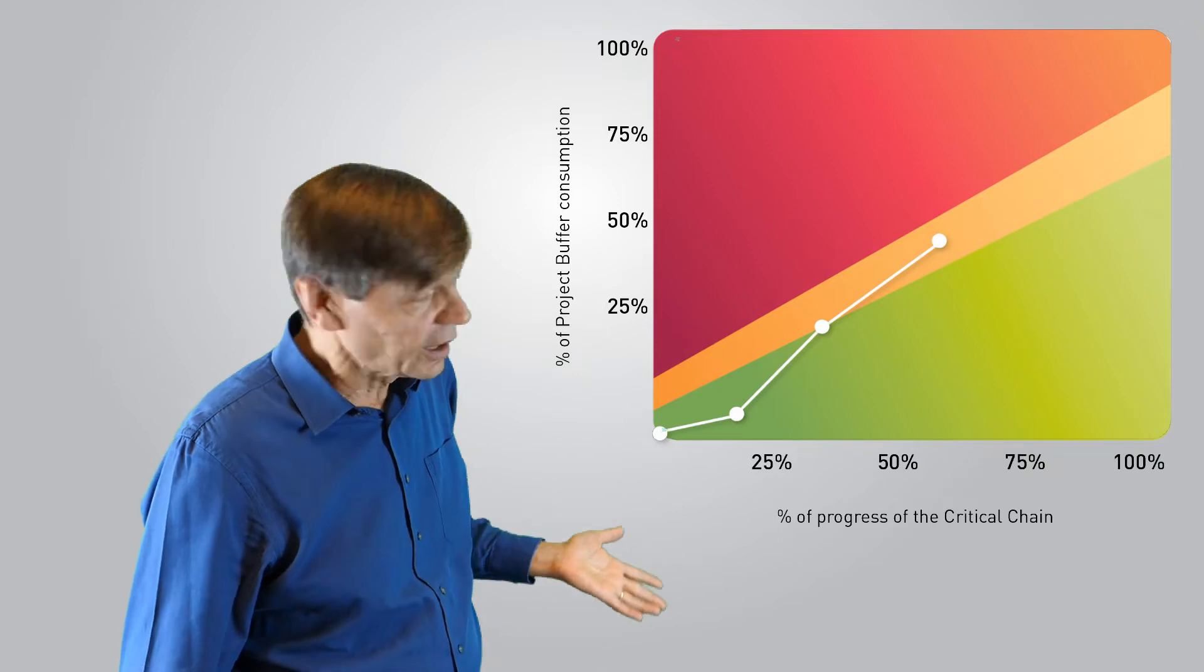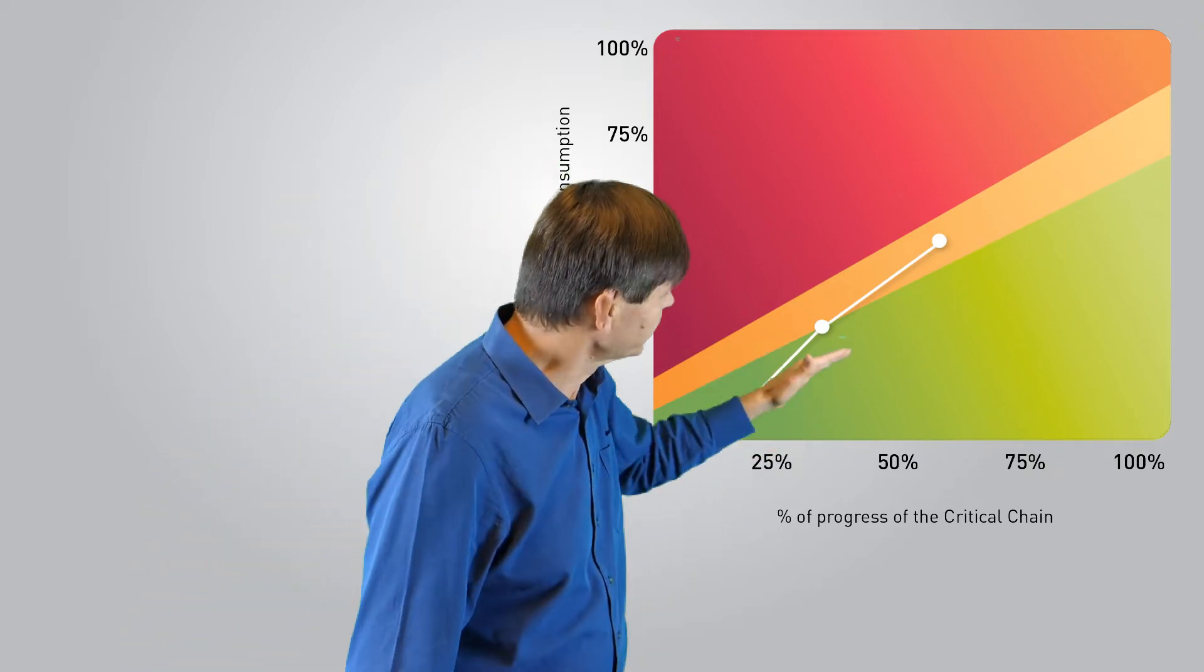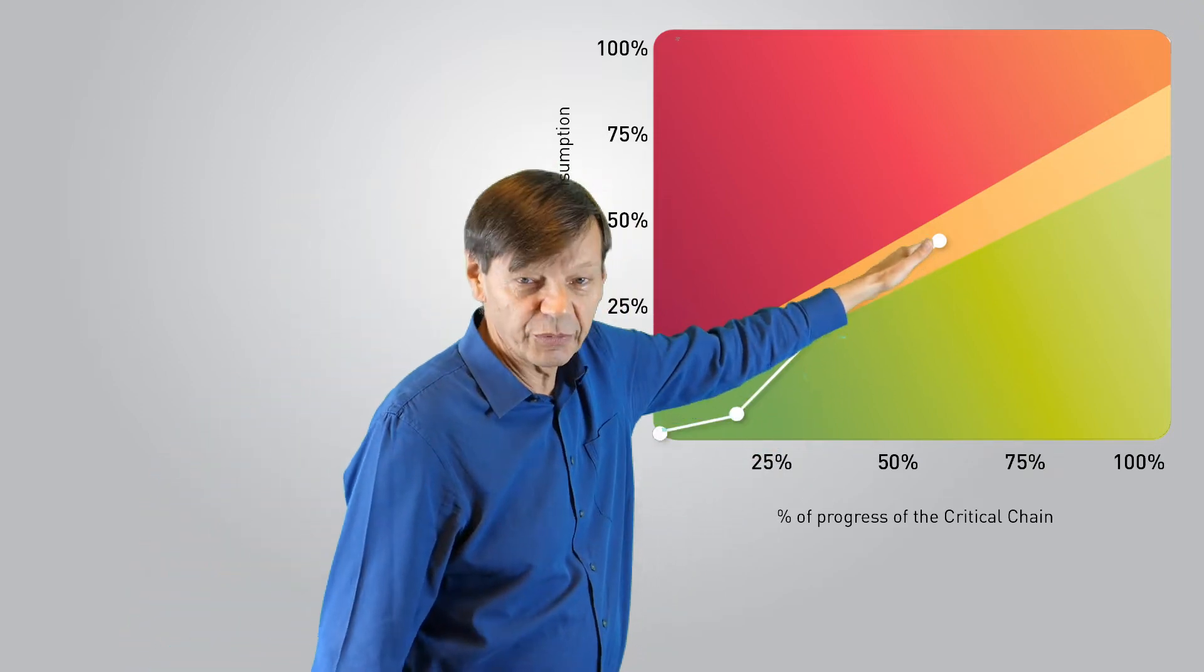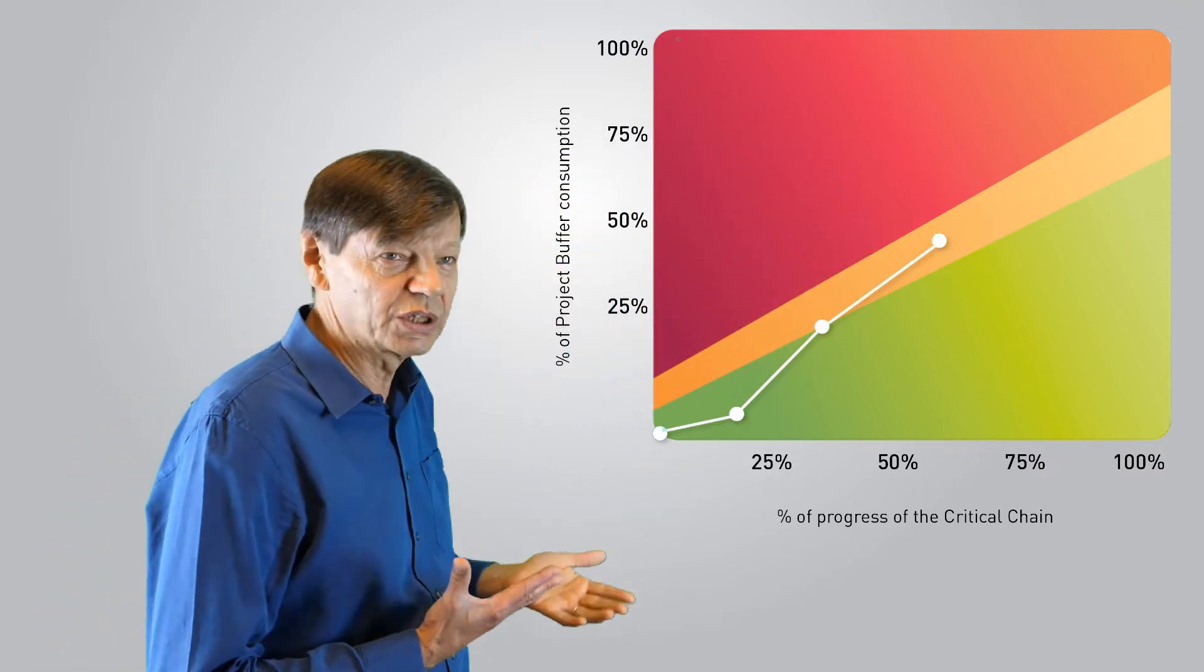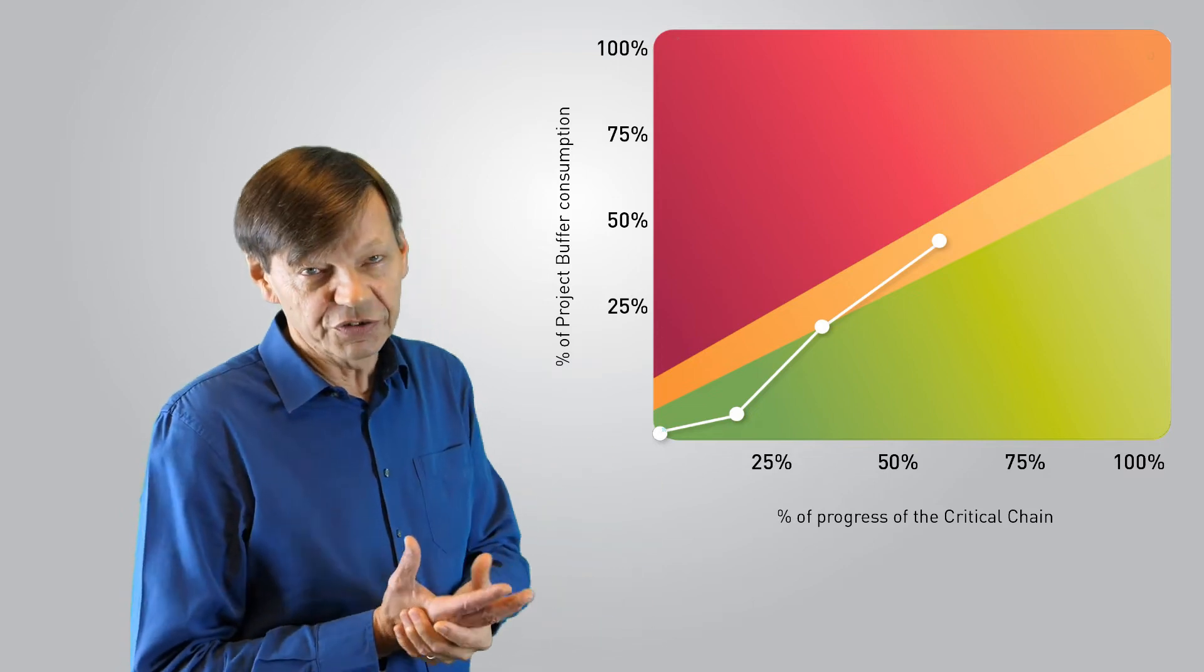So you have these fever charts, and if you have the fever chart of a project that's halfway done, the execution will stop somewhere up here in the middle. And you have all these different fever charts—individual ones of healthy projects with a good probability of each of them finishing on time or early.